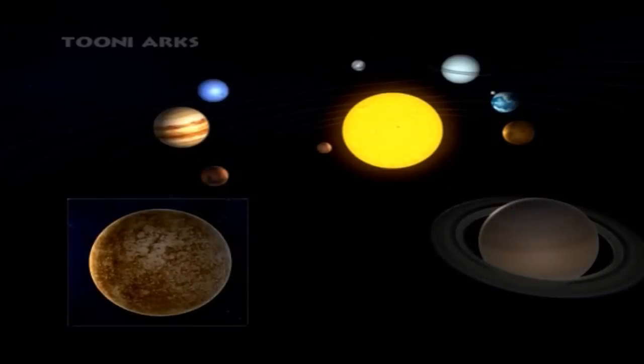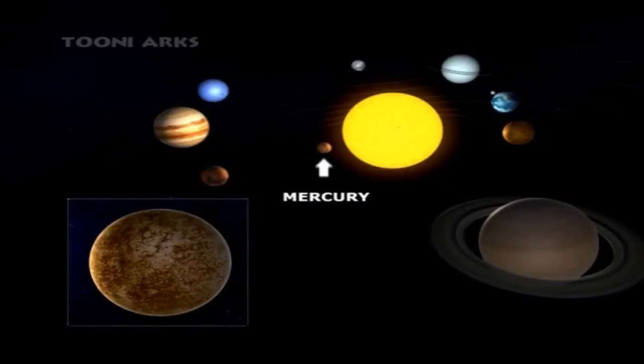The first planet is Mercury. It is the innermost and smallest planet in the solar system, orbiting the Sun.